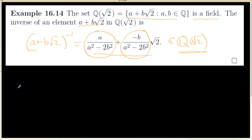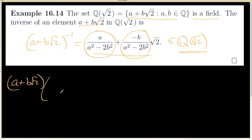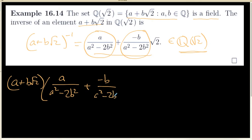The easiest thing to verify is the inverse relationship, so let's go ahead and get that done, because that's the thing a student who's stumped on this example is likely to think of as the first starting point. So if I look at a plus b times the square root of 2 and multiply it by a over a squared minus 2b squared plus minus b over a squared minus 2b squared times the square root of 2,